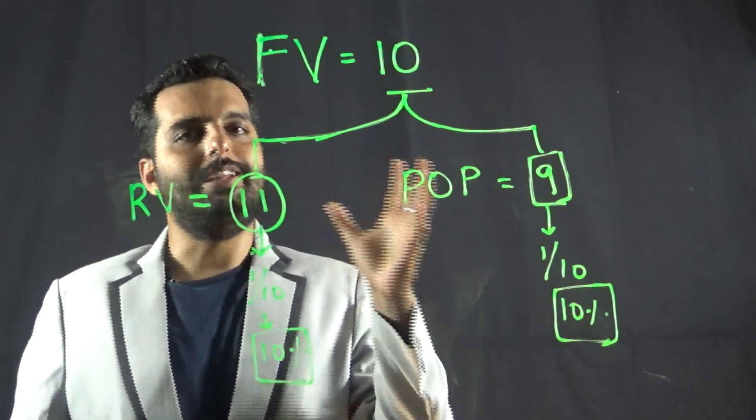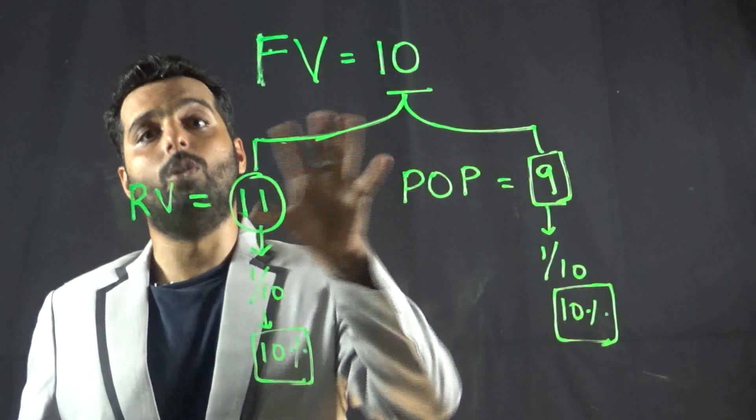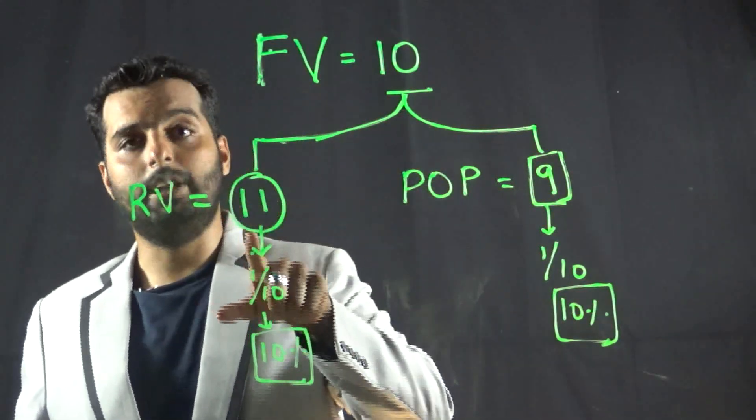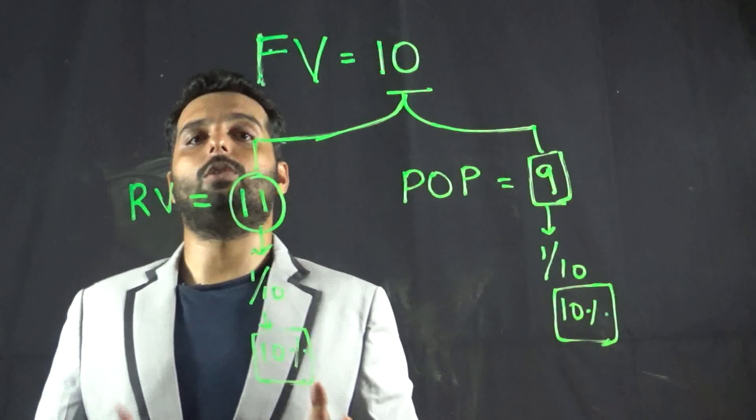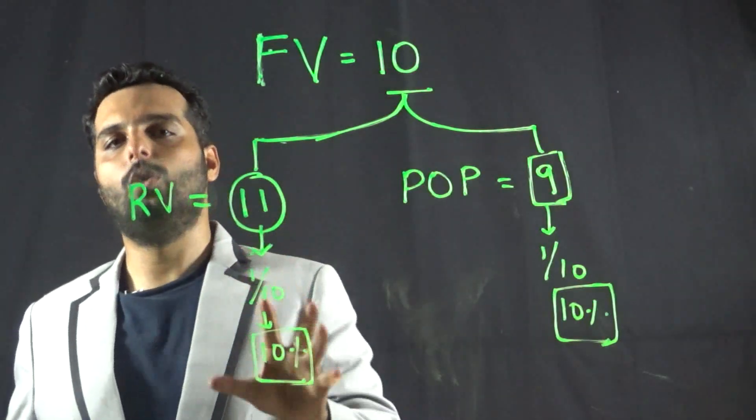Similarly, the extra 10% which is a load coming on the company on expiry is what we call the back-end load.